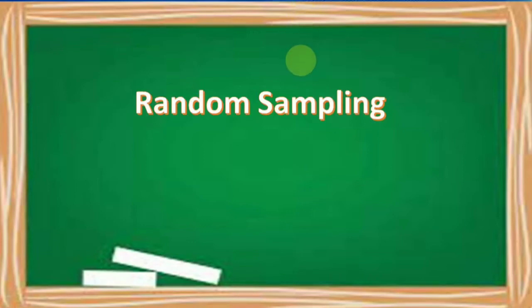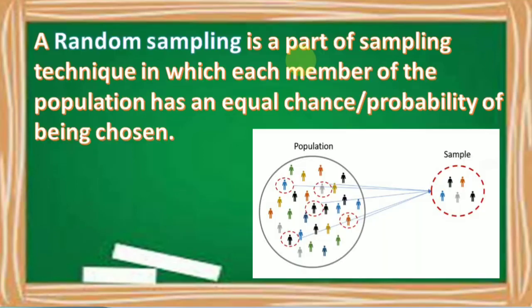Let us discuss the random sampling. A random sampling is a part of sampling technique in which each member of the population has an equal chance or probability of being chosen to be part of the sample.